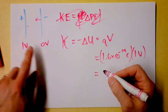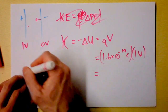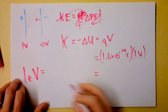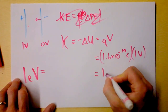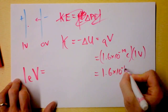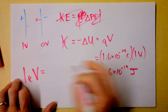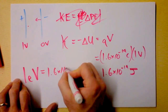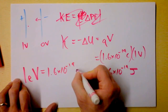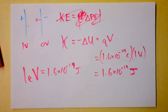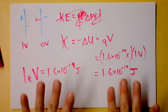It turns out that 1 electron volt is 1.6 times 10 to the negative 19th joules. That's kind of fun, and we'll use that as we go into the photoelectric effect coming up next.